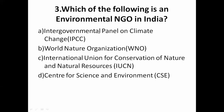Question 3: Which of the following is an environmental NGO in India? The options are IPCC (Intergovernmental Panel on Climate Change), WNO (Wild Nature Organization), IUCN (International Union for Conservation of Nature and Natural Resources), and CSE (Center for Science and Environment). The correct answer is CSE — the Center for Science and Environment.